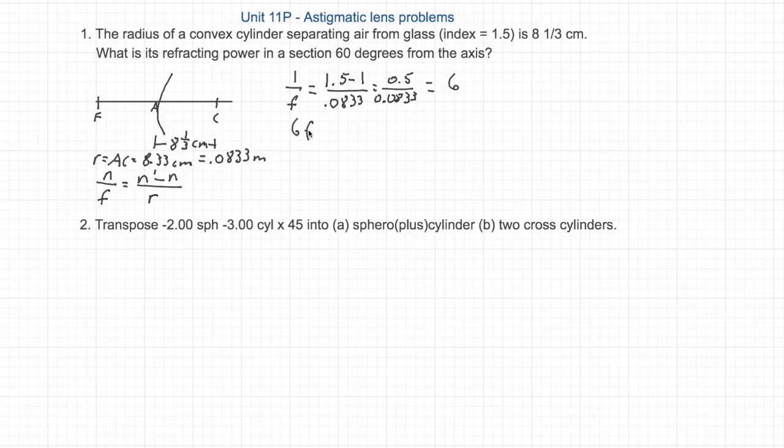And we find that 1 over F equals 6, which means the focal length is one-sixth of a meter. And the power equals N over F, or 1 over one-sixth, which equals plus 6 diopters.